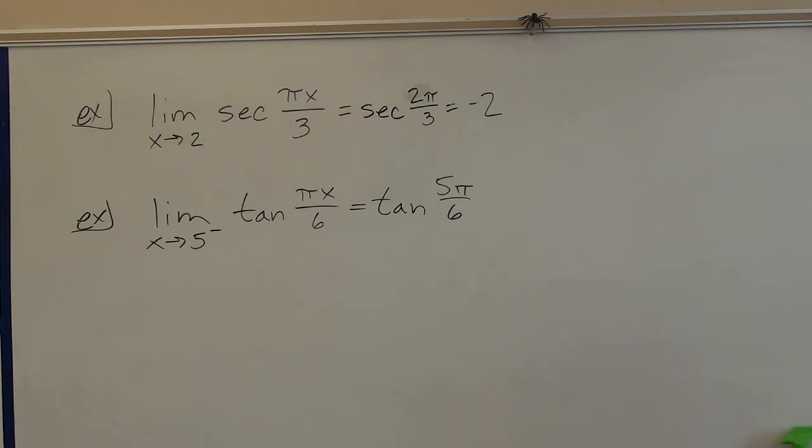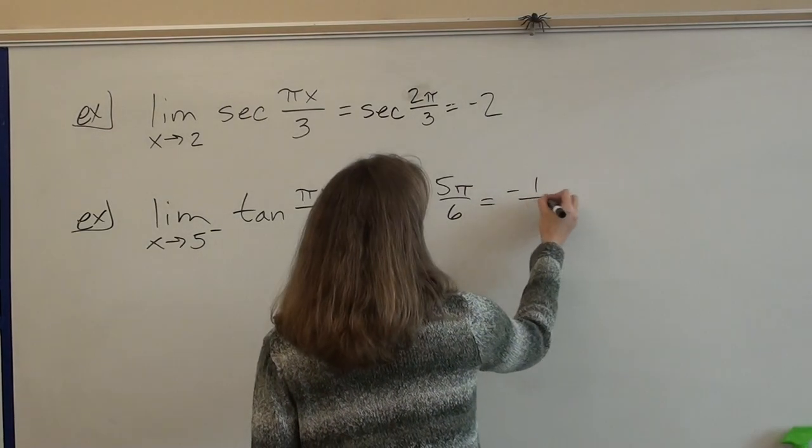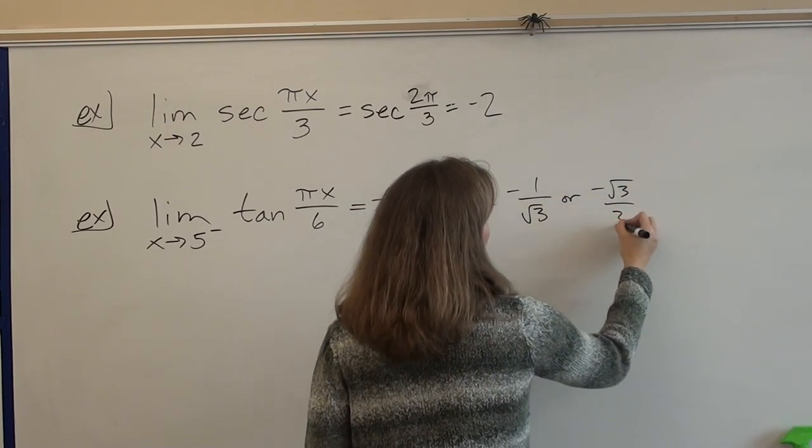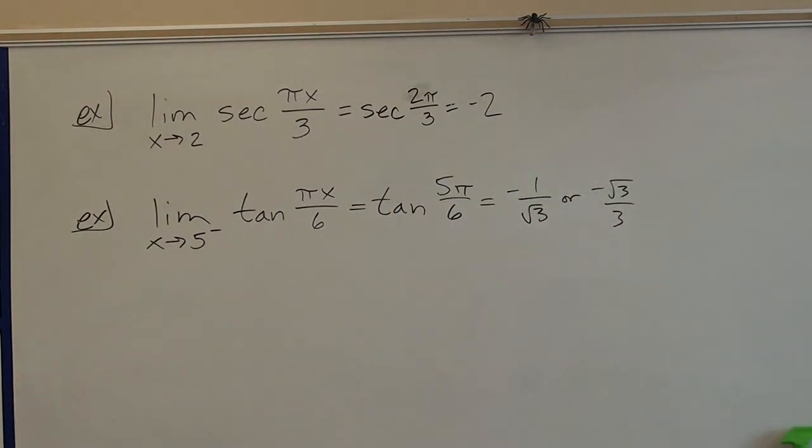So, the tangent of π/6, or 30 degrees, is 1 over root 3, right? Or if you want to write root 3 over 3. Now, 5π/6 is in which quadrant? 2. Second quadrant. Is tangent positive or negative there? It's negative. So, this is going to equal, and you could put either negative 1 over root 3, or negative root 3 over 3. I would take either way. Does that make sense? Good. Okay.